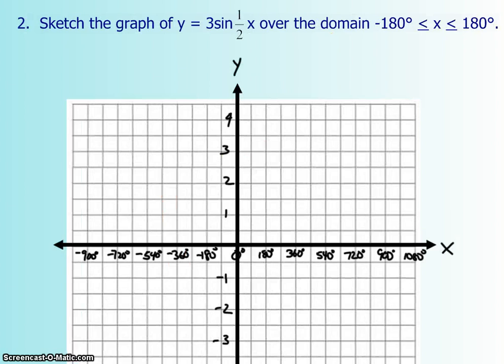The next one says sketch the graph, and now you have the 3 in front of the sin x, but you also have a k value of a half. Now they want it only over the domain of negative 180 to 180. So again, I'm going to start by drawing the sine graph. So this one starts at 0 this time. And I went up by 180's just to be able to fit the horizontal stretch from that half. It's going to go up to 1, down, and then down further, and then back up again. So that's one cycle of sine.